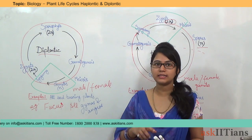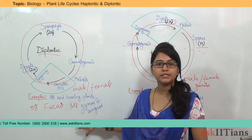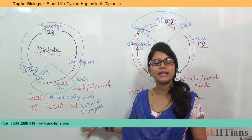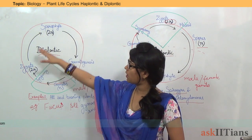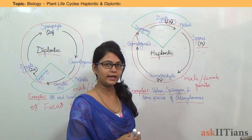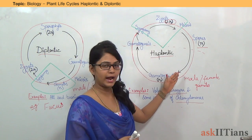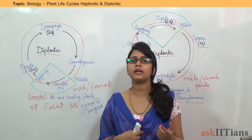In our last lecture we discussed about gymnosperms and angiosperms. So this is all about the diplontic life cycle and haplontic life cycle.